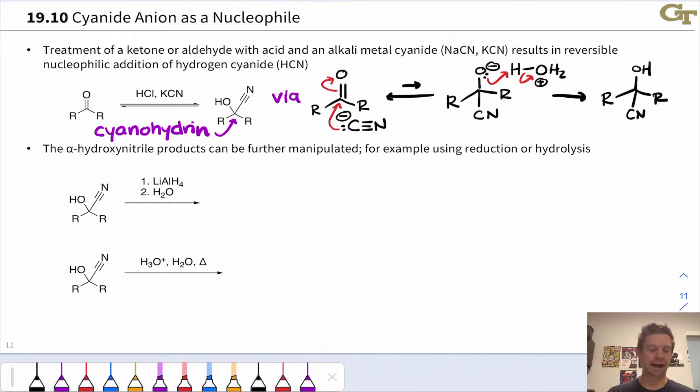These cyanohydrin or α-hydroxynitrile products can be further transformed using reduction with lithium aluminum hydride or hydrolysis. Reduction here takes advantage of the fact that the nitrile group behaves like a carboxylic acid derivative, and so can accept hydride from lithium aluminum hydride, converting the nitrile group into a primary amine.